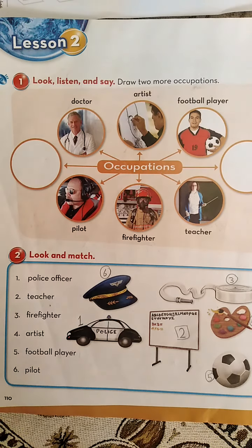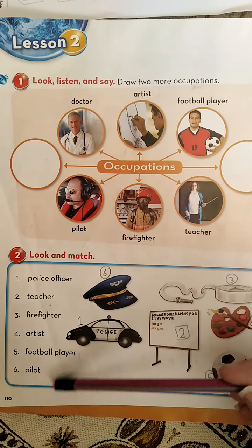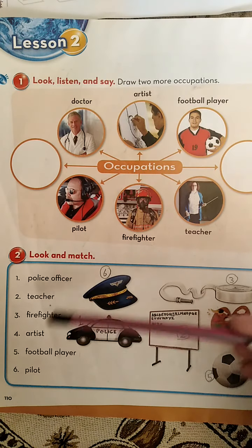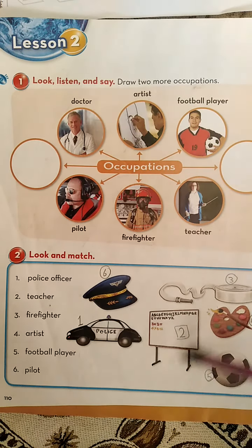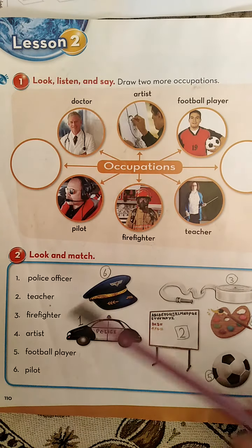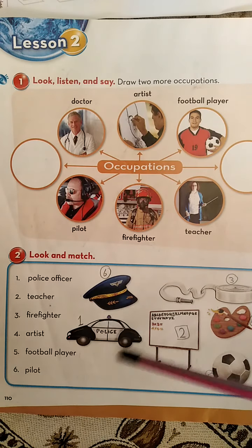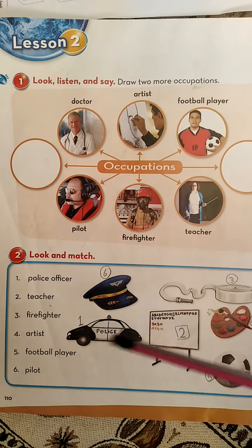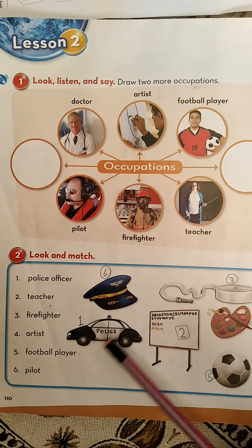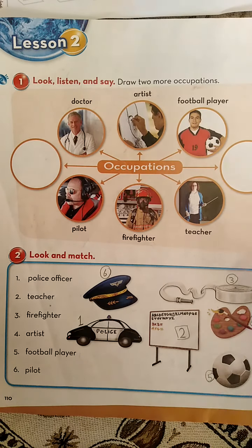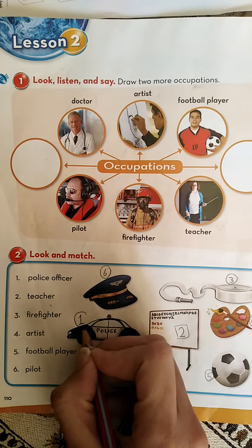Now let's move to exercise number two: Look and match. We have six occupations here. We will match them to the pictures. Number one: Police Officer — ومعناها رجل الشرطة. وهون عنا البوليس كار، فراح يكون عنا number one here. We will write number one here.